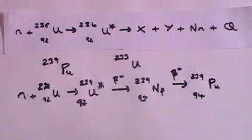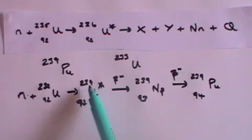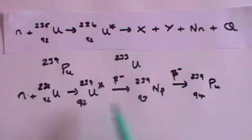In each case, a beta decay, beta minus decay, changes one neutron to a proton. So the total number of nucleons doesn't change, but the total number of protons increases by one.